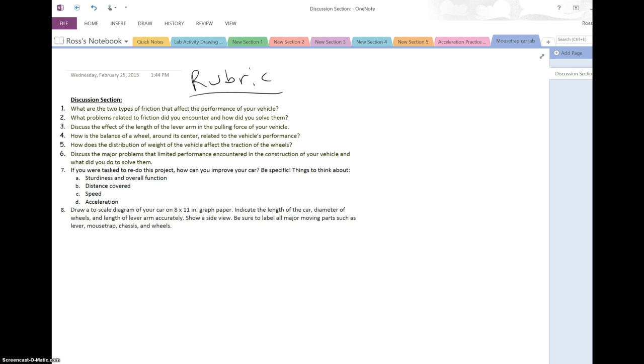Just to go question by question, for question number one, what are the two types of friction that affect the performance of your vehicle? That question can be answered very simply—kinetic and static friction. But what this question is really asking is not just what are the two types, but where do you see those two types of friction? Are they happening on the wheels? Where on the wheels? Where are you seeing kinetic, where are you seeing static, and how's that affecting your project?